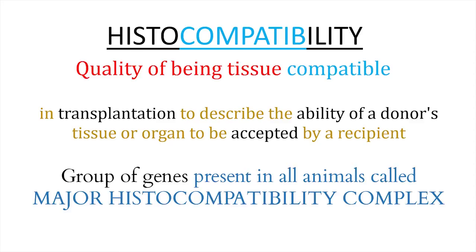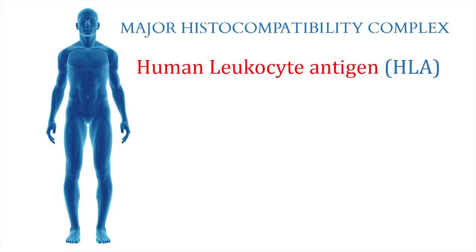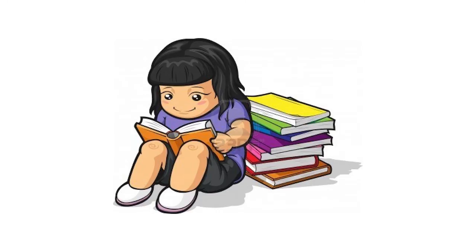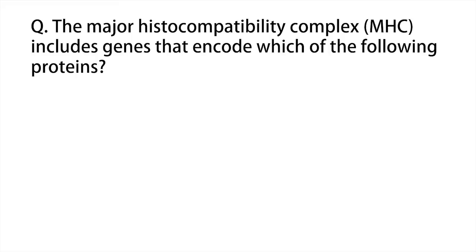These are the group of genes present in all animals, known as the Major Histocompatibility Complex, or MHC. In humans, the MHC is simply called Human Leukocyte Antigen, that is HLA. So human leukocyte antigens are the human form of MHC, and these are the proteins located on the surface of white blood cells and other tissues in the body.